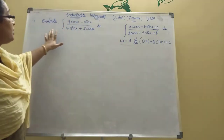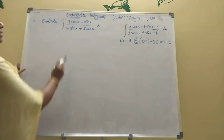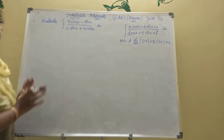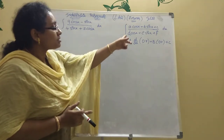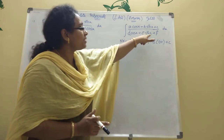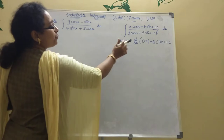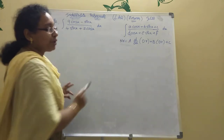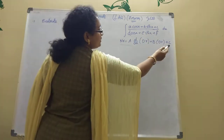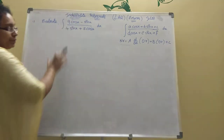In 2B integrations, the given problem is: integration of (9 cos x minus sin x) divided by (4 sin x plus 5 cos x) dx. There is one formula here. The integration of (A cos x plus B sin x plus C) divided by (D cos x plus E sin x plus F) type. First you should set numerator equal to A into d/dx of denominator, plus B into denominator plus C.